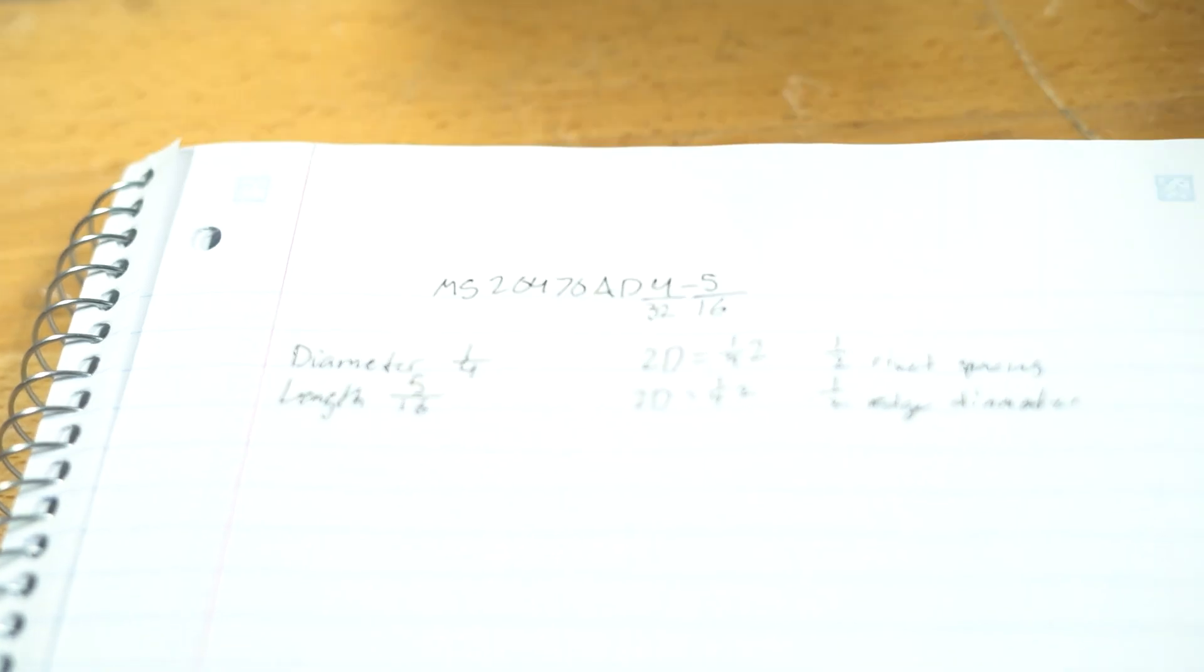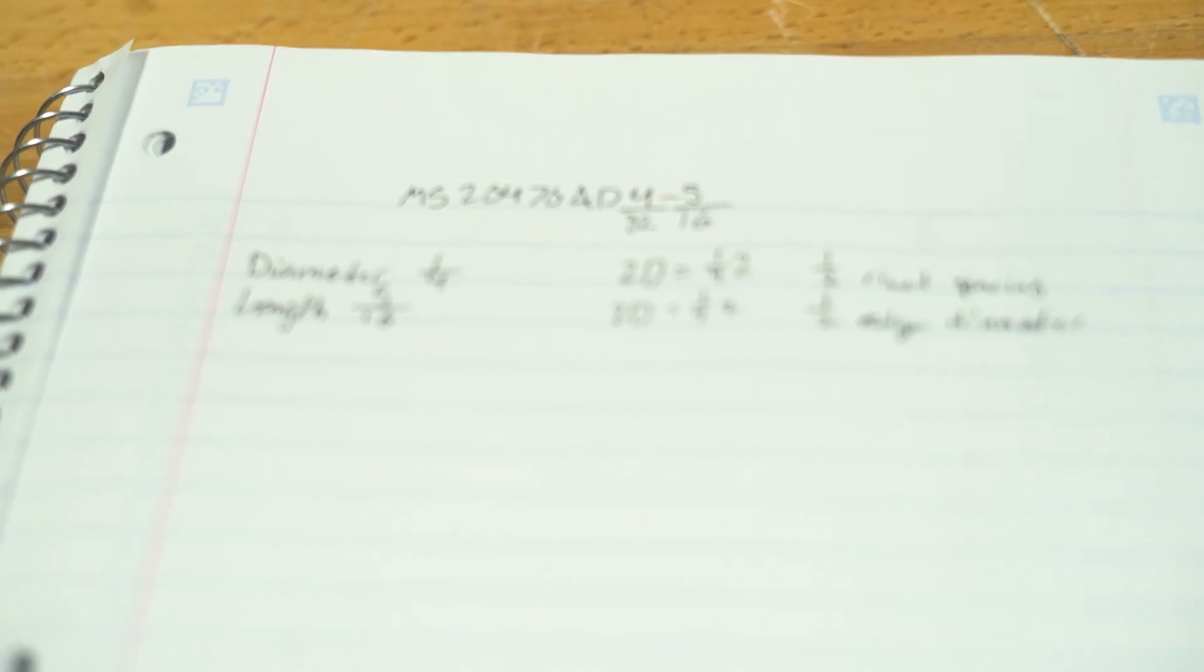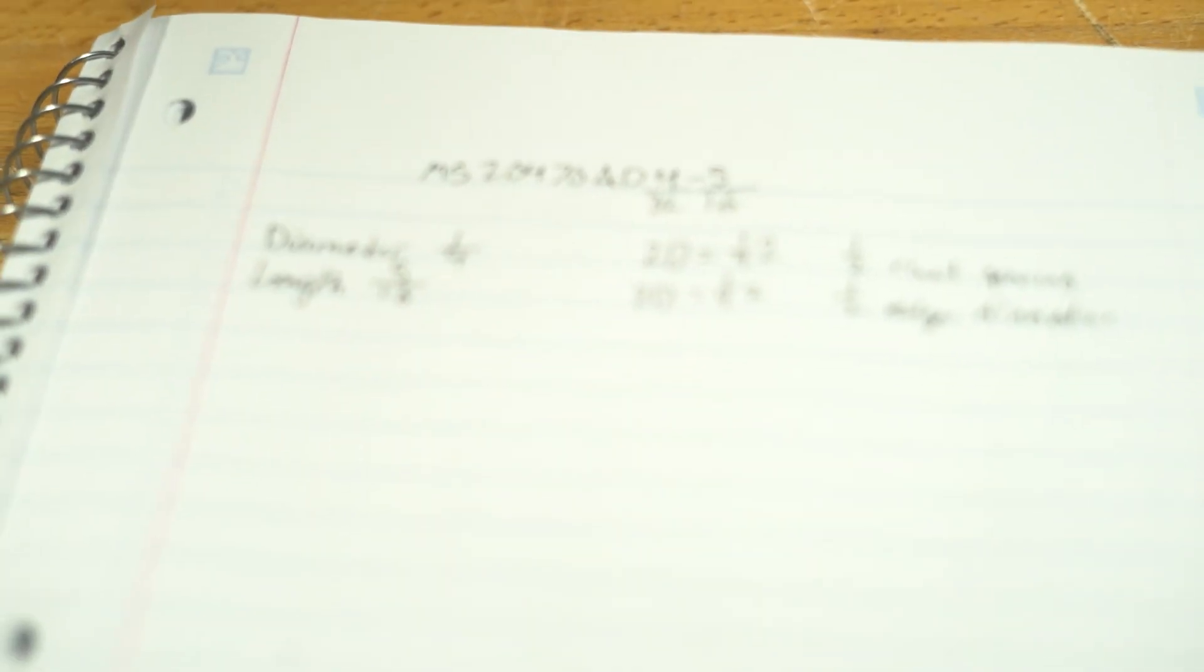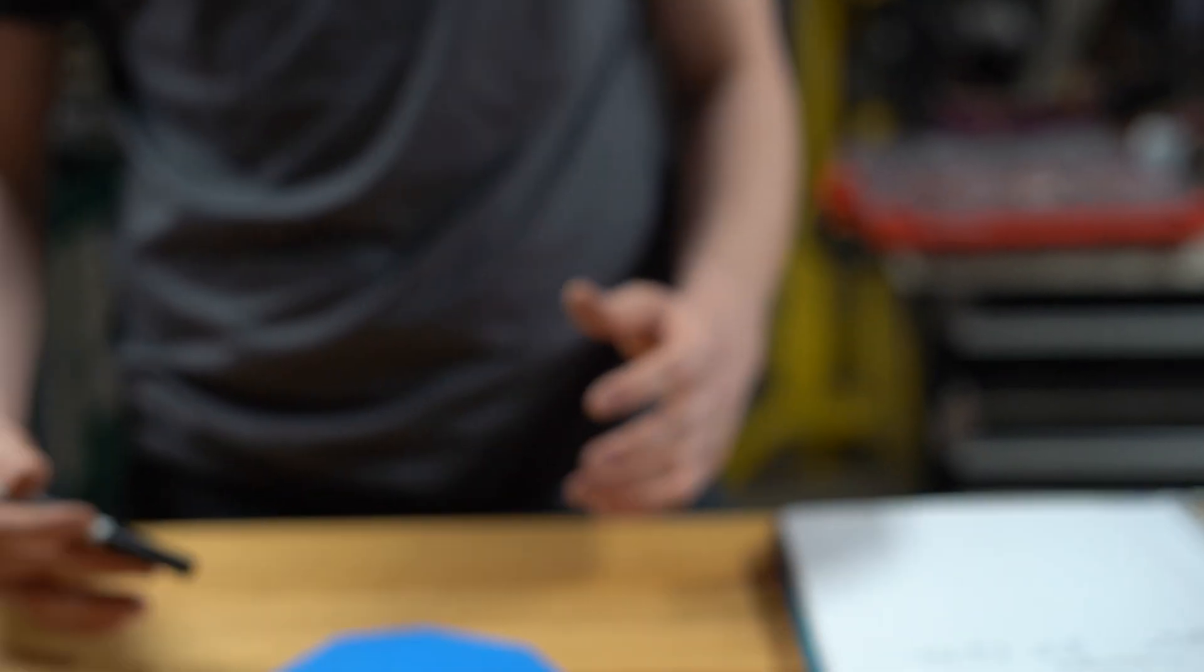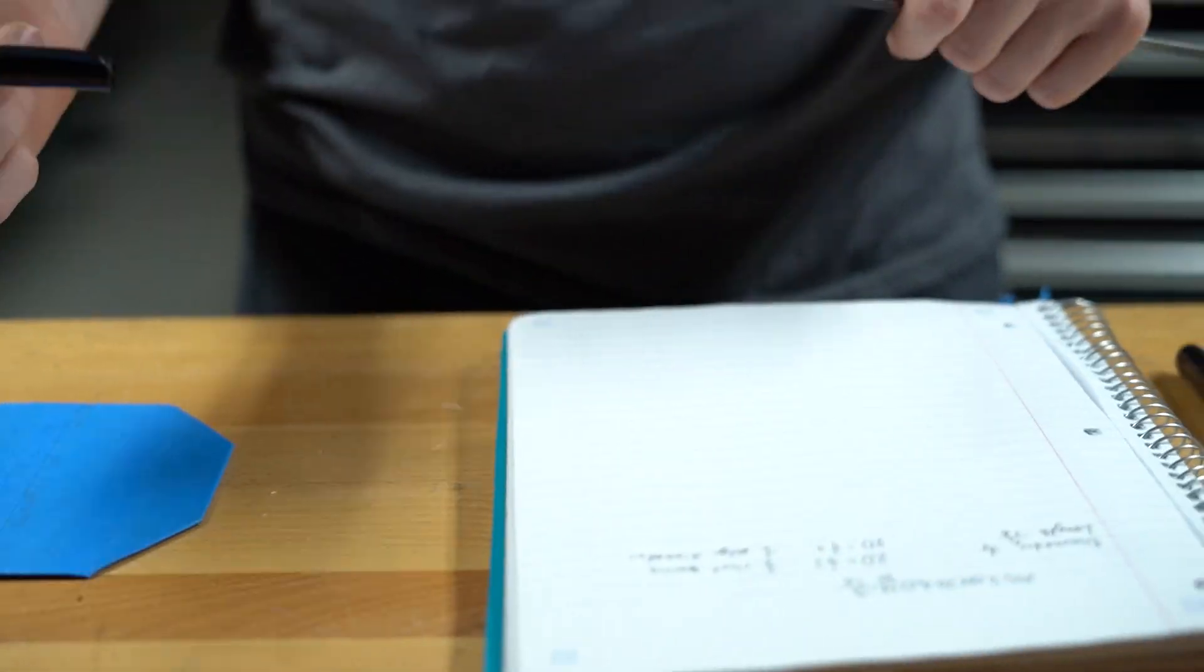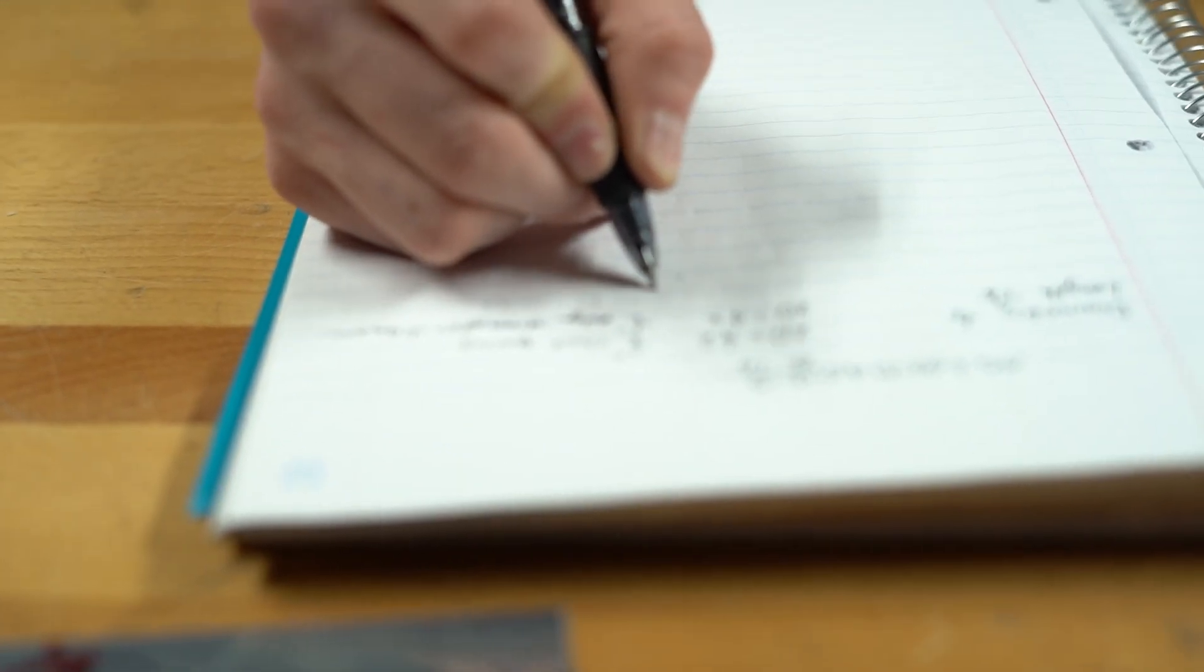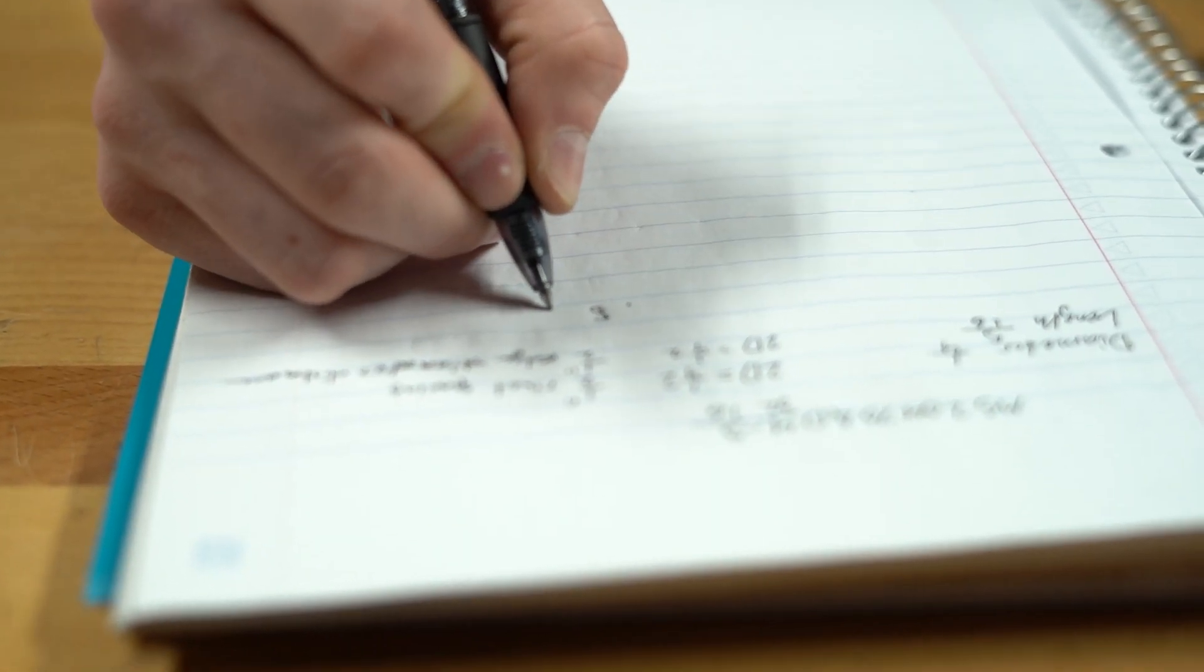First things first, you need the rivet number because it tells you the diameter and the length of the rivet. What you need to find out rivet spacing, what you need to find out edge distance, how the pattern is going to go out, how it should look. Now, of course, go into the maintenance manual of the plane that you're going to be fixing. That's going to give you a lot of information on how to do it, what it should look like. So I'm doing 2D and 2D for rivet spacing and edge distance. So my rivet spacing is going to be half inch, 0.5. And then the edge distance is also going to be 0.5.